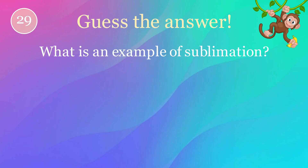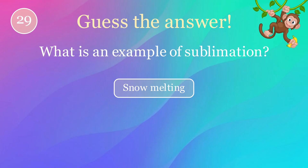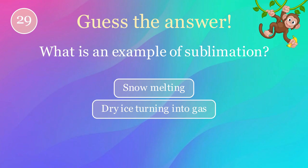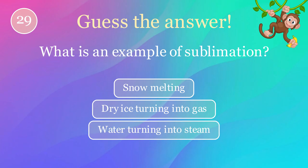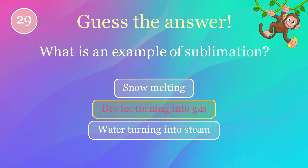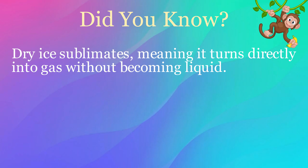What is an example of sublimation? Options: snow melting, dry ice turning into gas, water turning into steam. The correct answer is dry ice turning into gas. Here's an interesting fact: dry ice sublimates, meaning it turns directly into gas without becoming liquid.